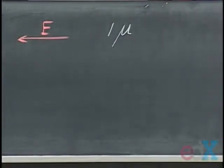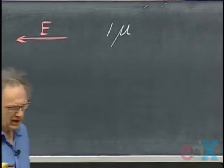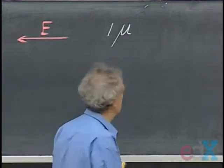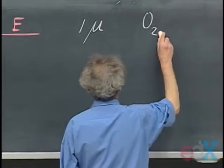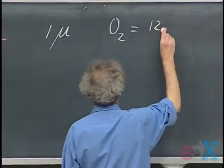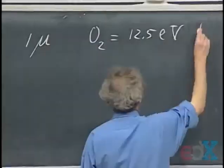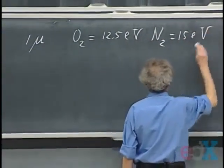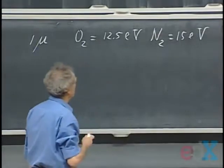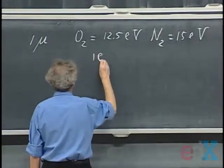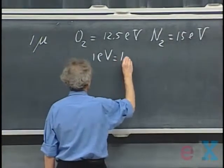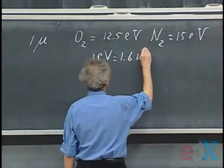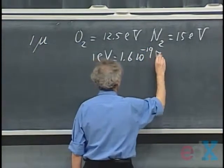To ionize nitrogen, to ionize oxygen, takes energy. To ionize an oxygen molecule takes 12.5 electron volts, and to ionize nitrogen takes about 15 electron volts. What is an electron volt? Well, an electron volt is a teeny weeny amount of energy. It's 1.6 × 10^-19 joules.